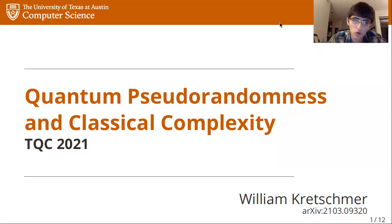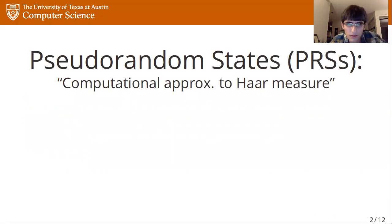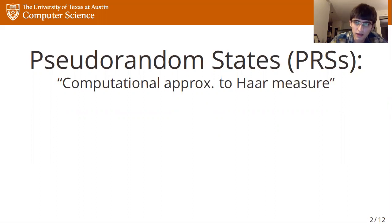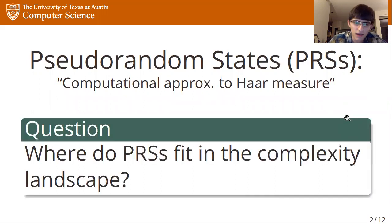Hi, I'm William, and today I'm going to be talking about quantum pseudorandomness and classical complexity. To explain what this talk is about, I'm mostly going to be talking about something called pseudorandom quantum states, which I will sometimes abbreviate as PRSs. Intuitively, you can think of pseudorandom states as being computational approximations to the HAAR measure — to random unit vectors, random quantum states.